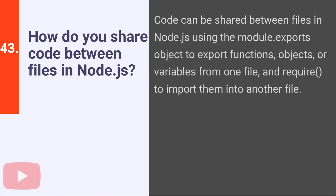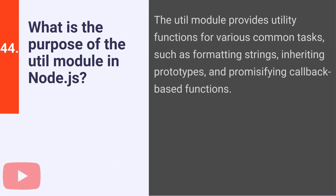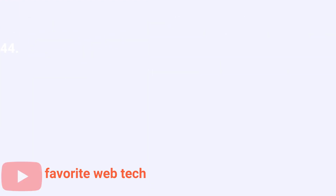How do you share code between files in Node.js? Code can be shared between files using the module.exports object to export functions, objects, or variables from one file, and require to import them into another file. What is the purpose of the util module in Node.js? The util module provides utility functions for common tasks such as formatting strings, inheriting prototypes, and promisifying callback-based functions.